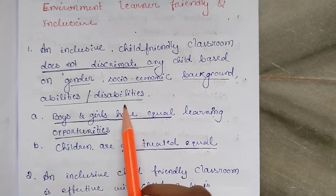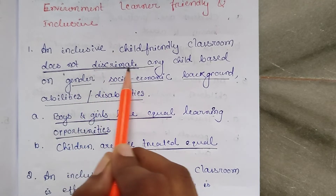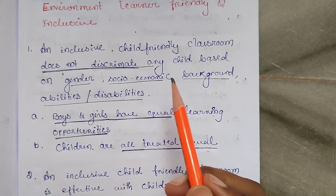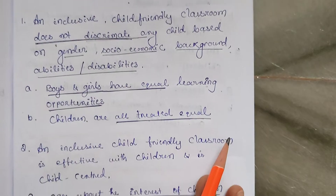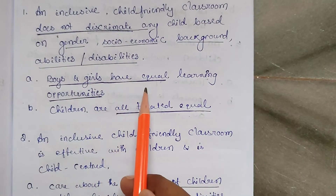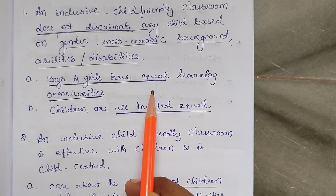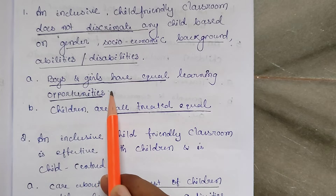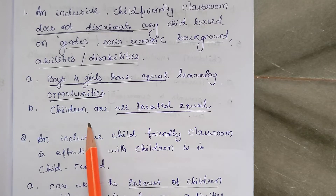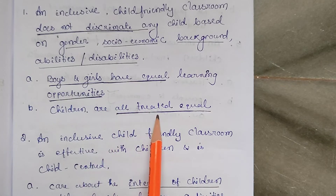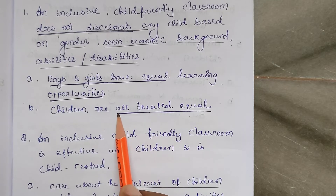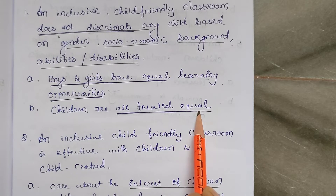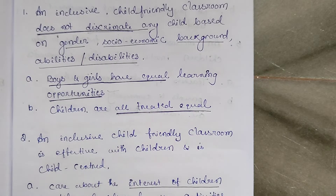In education, there is no discrimination among the students — all students are equal in the classroom. Boys and girls have equal learning opportunities, so there is no gender discrimination. Children are all treated equal — no economic background discrimination, no ability or disability discrimination — nothing. All are treated equal.